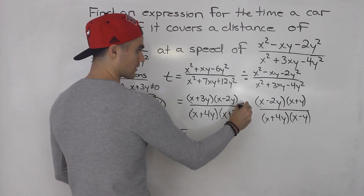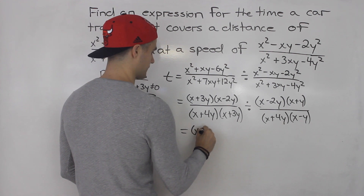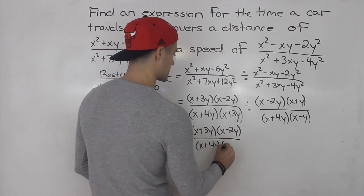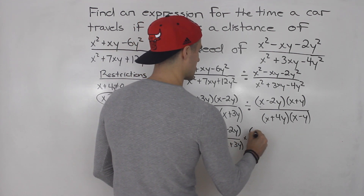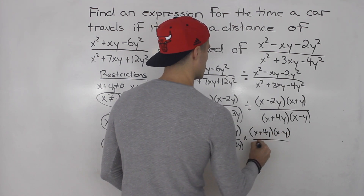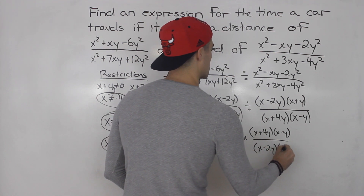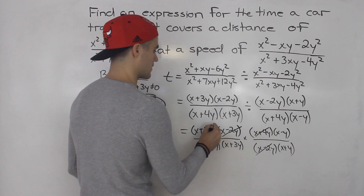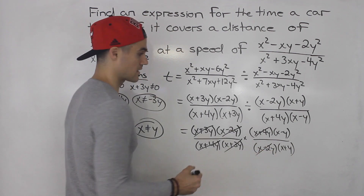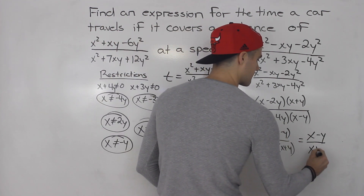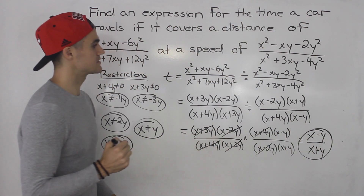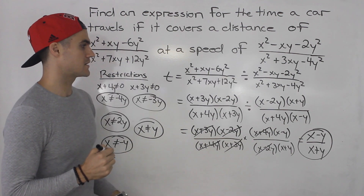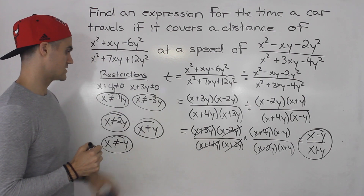From here, since we are dividing, we flip the second fraction and change the operation to multiplication. So we have (x plus 3y)(x minus 2y) over (x plus 4y)(x plus 3y) multiplied by (x plus 4y)(x minus y) over (x minus 2y)(x plus y). Then we look for factors that cancel: x plus 4y cancels, x minus 2y cancels, and x plus 3y cancels, leaving x minus y over x plus y. That is the simplified expression for the time the car travels at this distance and speed — that's the final answer. The five restrictions also apply.